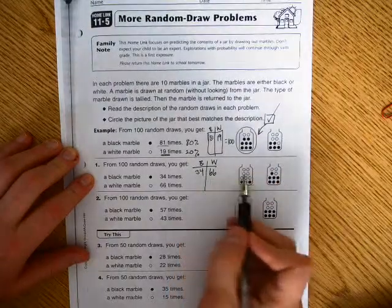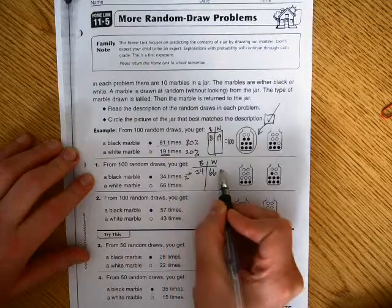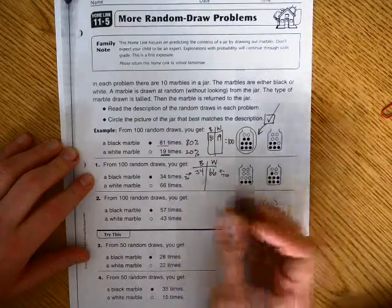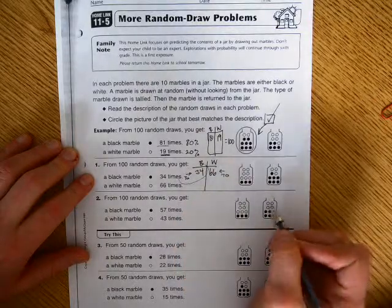And then I'm going to look at my choices. This is about 30, right? And this is about 70, so I would expect the black to be 30%, the white to be 70%.